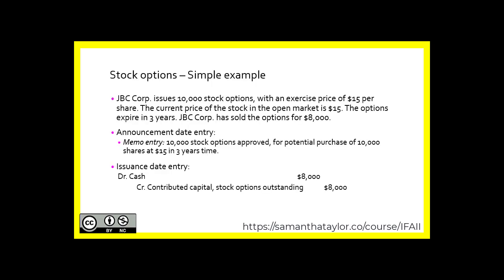Let's look at a simple example. JBC Corp issues 10,000 stock options with an exercise price of $15 per share. The current price of the stock option in the open market is $15. The options expire in three years. JBC Corp has sold the options for $8,000. Upon announcement, a memo entry is made: 10,000 stock options approved for potential purchase of 10,000 shares at $15 in three years' time. At the issuance date, the entry is: debit cash, credit contributed capital — stock options outstanding — for $8,000.